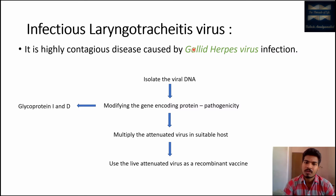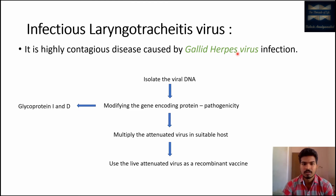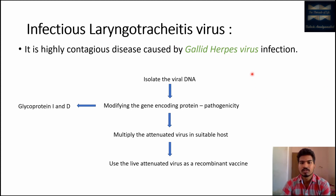This mutated gallid herpesvirus can be used directly in a live form as an attenuated recombinant vaccine. Remember that infectious laryngotracheitis disease was caused by pathogenic proteins synthesized by gallid herpesvirus. Since the virus can no longer produce those pathogenic proteins, we have converted the pathogenic virus into a non-pathogenic one. This is the example for attenuated recombinant vaccine.